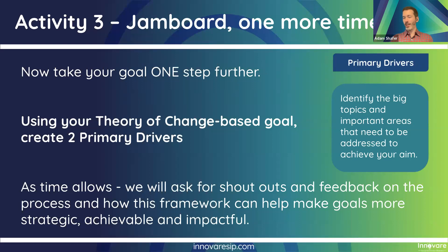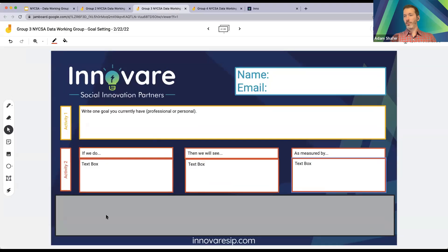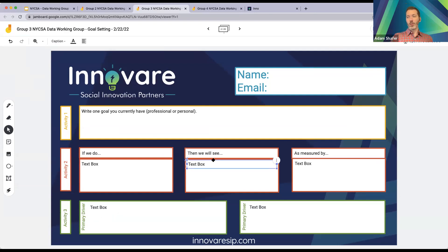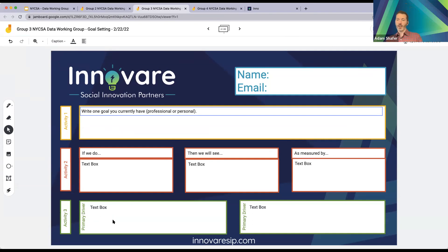We're going to get back in the Jamboard. We're going to take what we just learned about the driver diagram — it's an extensive framework that takes time and diligence to design, but we just want to practice. In the third box on your Jamboard, remove the gray box — that's activity three. What we're going to do is create two primary drivers that you believe will help you reach your aim. Your aim is your goal from activity two. What are those two big bucket ideas that will drive change in your overall goal?